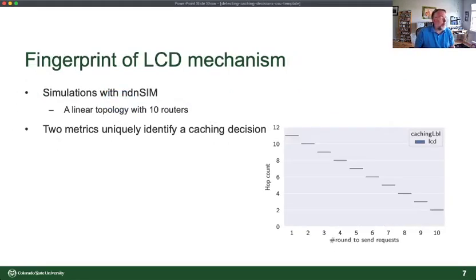All right, so we actually simulated this in NDNSIM using a linear topology of 10 routers. This is basically how we did most of the initial work. And you can identify the caching decision based on the hop distribution in each round.